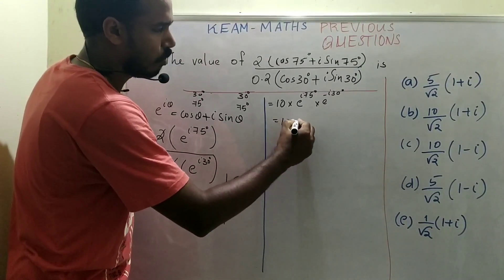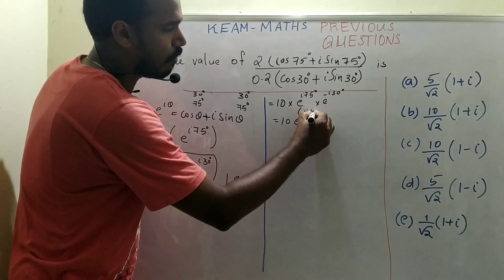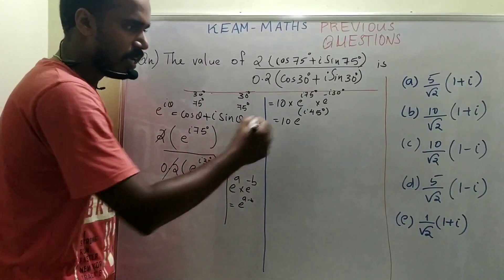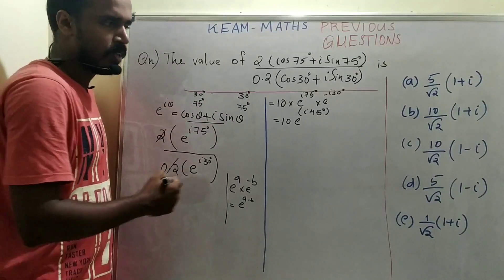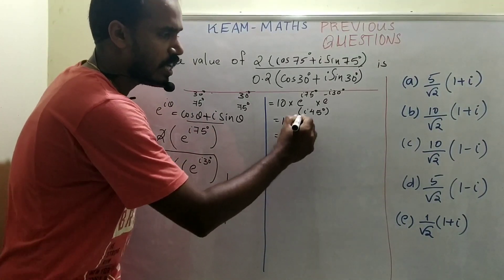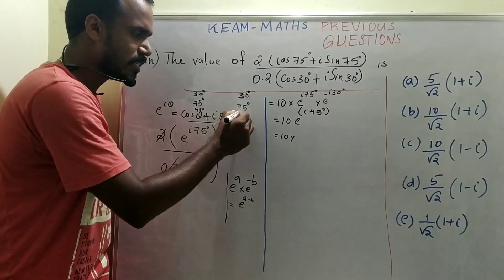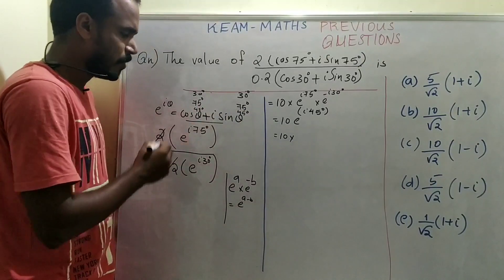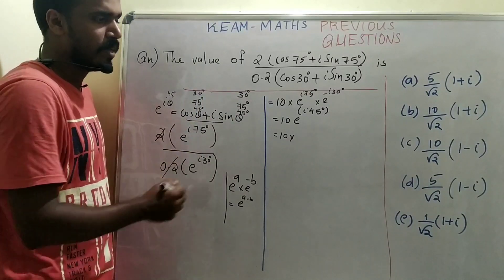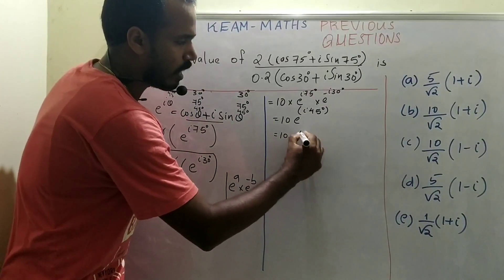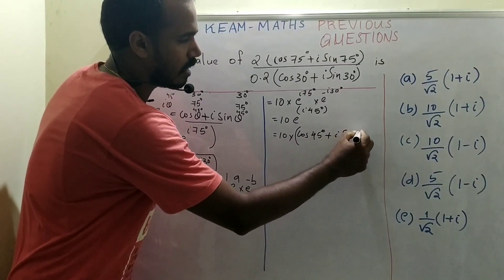This gives e^(i45°), since 10 · e^(i(75°-30°)) = 10 · e^(i45°). And e^(i45°) = cos45° + i·sin45°.